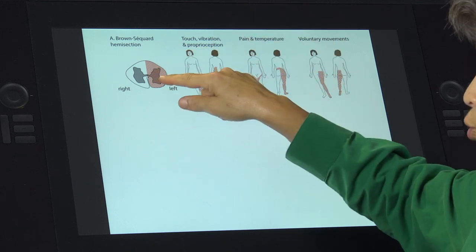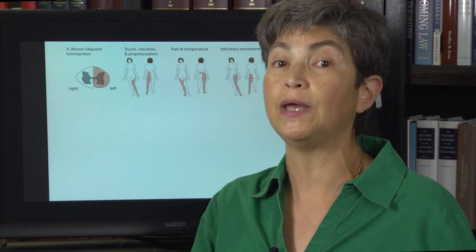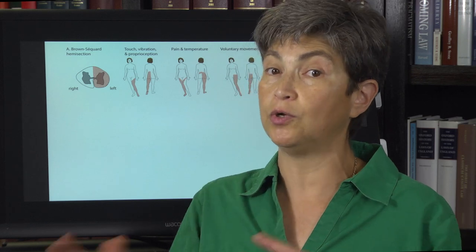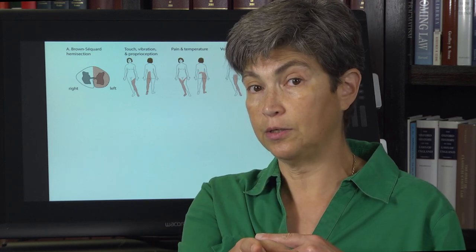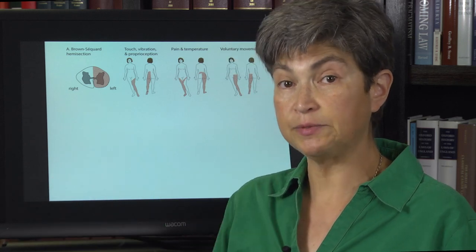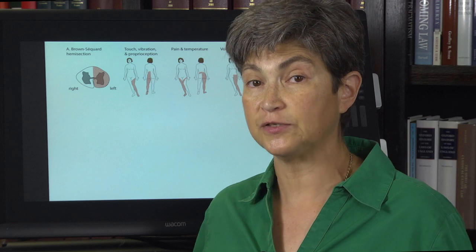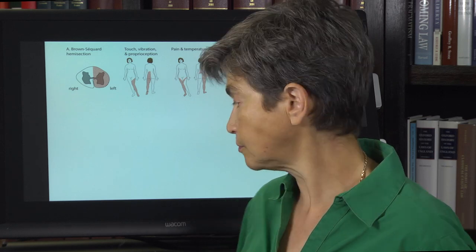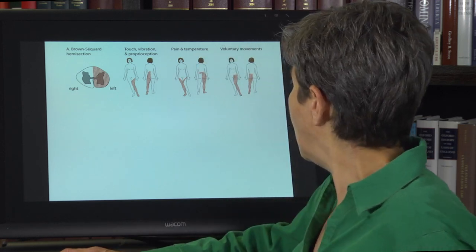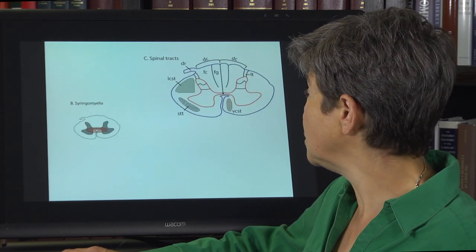If this lesion is in the lumbar cord, will you get a Horner syndrome? No, it's too low. But if the lesion were up in the cervical cord, would you get a Horner syndrome? Yes. Which side would it be on? Ipsilateral — on the same side as the lesion. So a left-sided lesion would give us a left-sided Horner's. That's a really important lesion. Now we're going to move on to the second lesion, which is called syringomyelia.